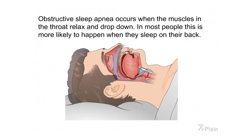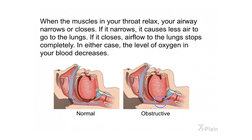Obstructive sleep apnea occurs when the muscles in the throat relax and drop down. In most people, this is more likely to happen when they sleep on their back. When the muscles in your throat relax, your airway narrows or closes. If it narrows, it causes less air to go to the lungs. If it closes, air flow to the lungs stops completely. In either case, the level of oxygen in your blood decreases.